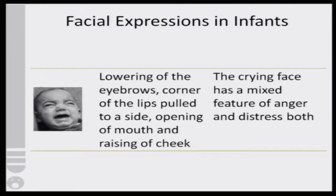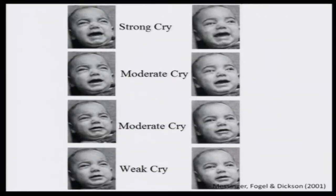The crying face has a mixed feature of anger and distress. Anger in adults would be considered a basic emotion. Similarly, disgust will have a different expression; here distress and anger both mix up although the child is trying to express the negative feeling. Depending on certain situations the child might come forward with different sets of expressions — from weak cry, to moderate cry, and then finally the strong cry.